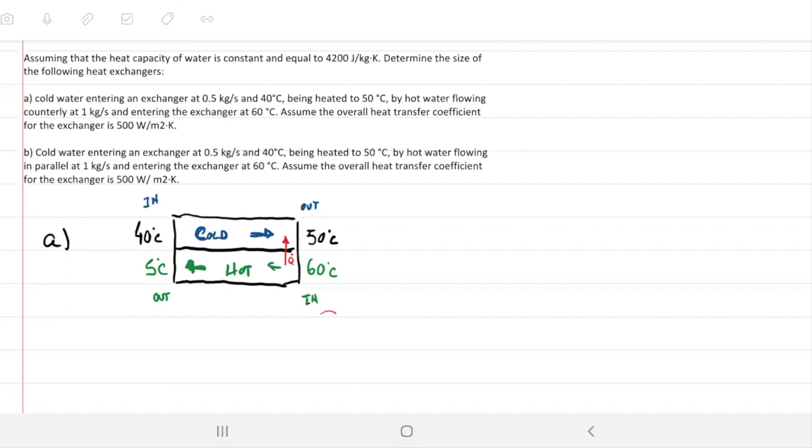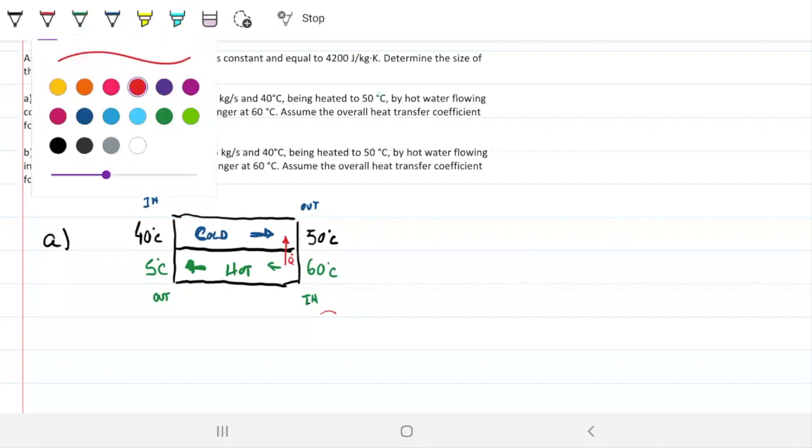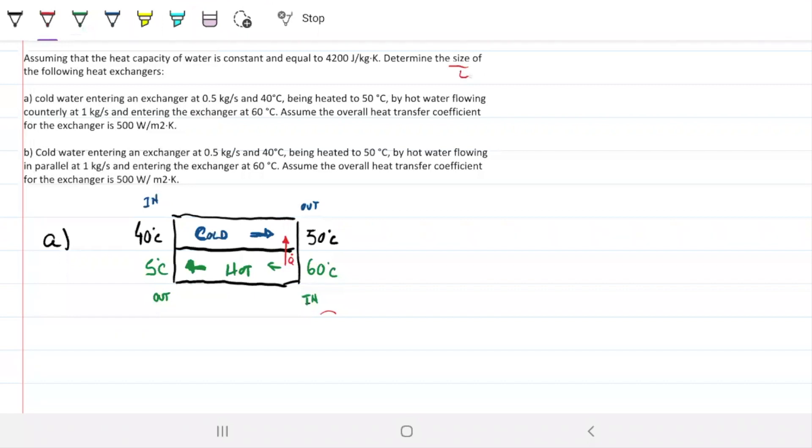Two things for us in the beginning: the size of the heat exchanger is asking us for the area of this heat exchanger. We can then convert the surface area required into different shapes according to the type that we want, but whenever they ask for the size, they're asking for the area.